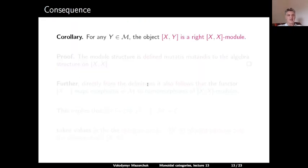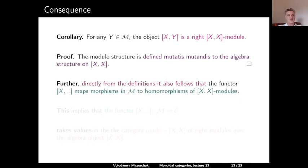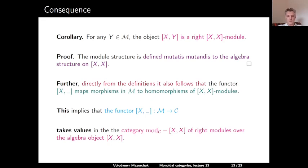Another consequence of the same argument is that for any Y in M, the internal hom [X, Y] is a right module over the algebra object [X, X] — the proof follows from the same computation. Further, directly from the definitions, the functor of taking the internal hom starting at X — which goes from M to the left regular representation of C — in fact takes values in the category of all right modules over [X, X], sending morphisms in M to homomorphisms of modules.